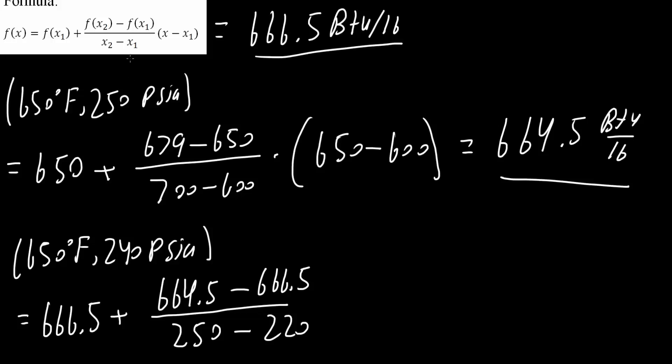And x₁ was 220 PSI, times x, which is 240 PSI, minus x₁, which was 220 PSI. If you run this into a calculator, we would get 665.2 BTUs per pound.